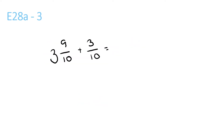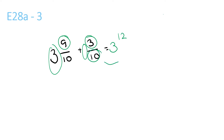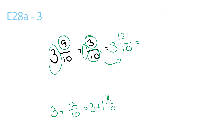What we do is add the whole numbers at the front. So we've got 3 plus nothing, which is just 3. Then we do the top ones, 9 plus 3, which is 12. Then we bring the 10 over. So it's 3 and 12 over 10, which is the same as 3 plus 12 over 10. We have to convert 12 over 10 to a mixed number, so it would be 1 and 2 over 10. So it would be 3 plus 1, giving 4 and 2 over 10, which can be simplified to 4 and 1 over 5.